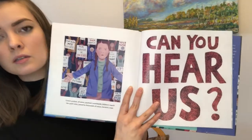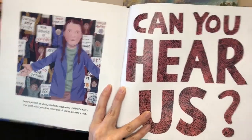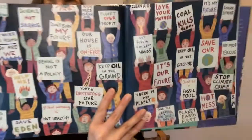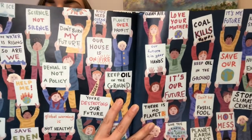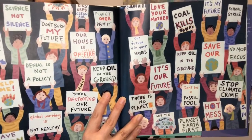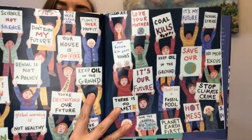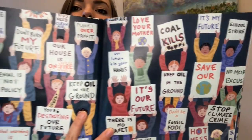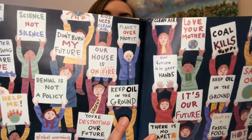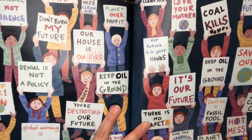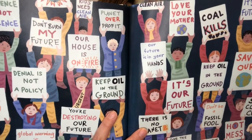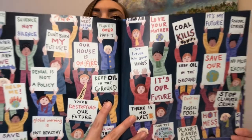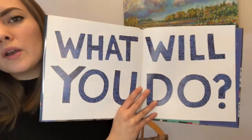'Can you hear us?' And the signs read: School Strike. It's my future. No more excuses. Our future is in your hands. Love your mother. Our house is on fire. Denial is not a policy. You're destroying our future. Global warming is not healthy. The water is rising and so are we. What will you do?